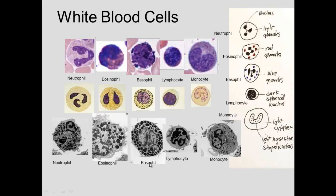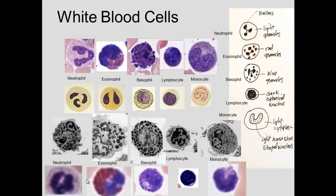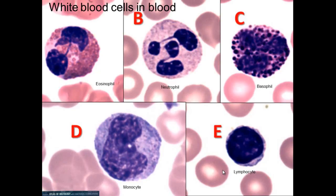At the electron microscopic level, neutrophils have granules, but not as large as eosinophils or basophils. All three granulocytes have lobulated nuclei — these are different lobes of the same nucleus. Lymphocytes have ribosomes, a little cytoplasm, and mitochondria. Monocytes have more organelles, ready to ingest material as they become macrophages. Eosinophils have big granules with a lobulated nucleus, neutrophils have smaller granules, and basophils have large blue granules.